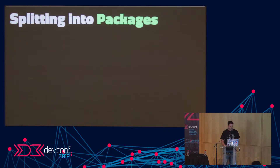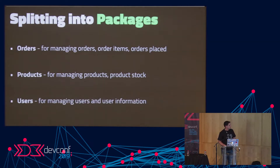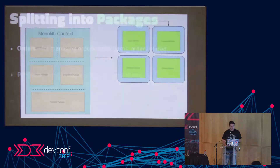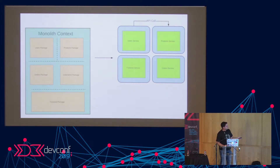The first step is to split into packages. For our order management system example, we could have an orders package for managing all orders, a products package for managing products and stock, and a users package for managing users and their information. Once you've grouped code into different contexts, you end up with a users package, products package, orders package, and front-end package. The dotted lines between them are the seams — it becomes very obvious what package is responsible for what and how communication will occur. These seams will eventually translate into API calls.